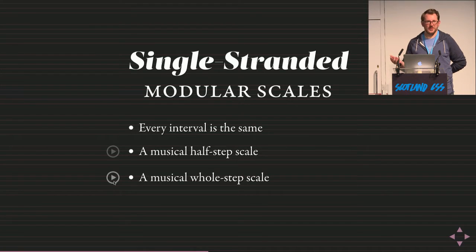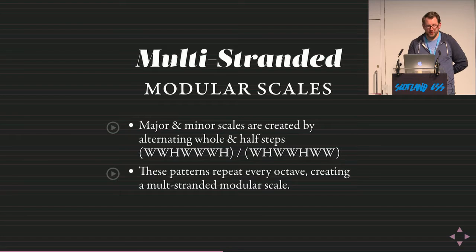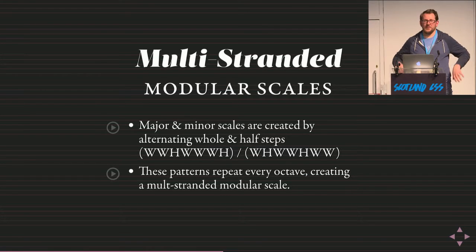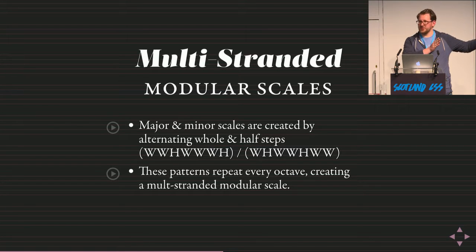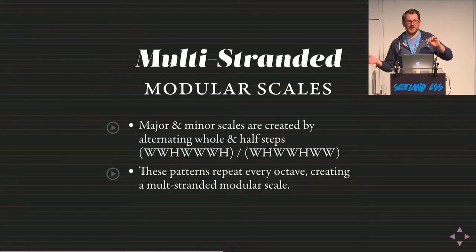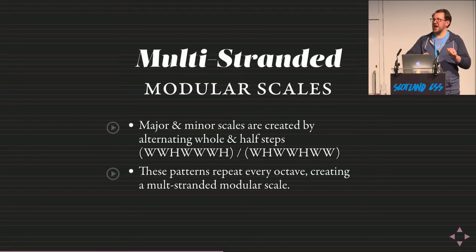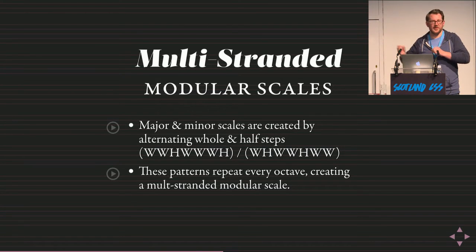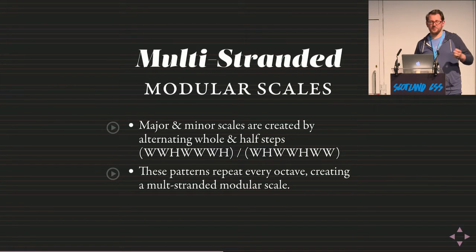Multi-stranded modular scales are different. Every octave is a pattern that repeats, but the intervals inside that pattern aren't identical. A single-stranded scale is like marking every 10 centimeters on a meter stick — every interval is the same. Multi-stranded is like marking notches at 30, 50, and 75 centimeters: the intervals differ, but you can keep repeating that same pattern over and over. That's multi-stranded.